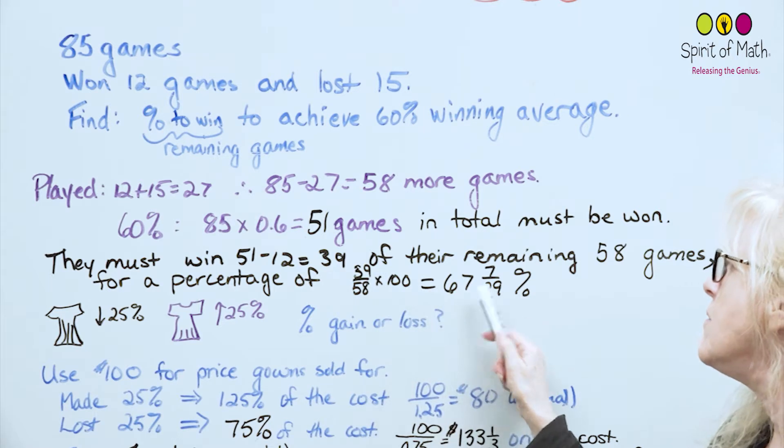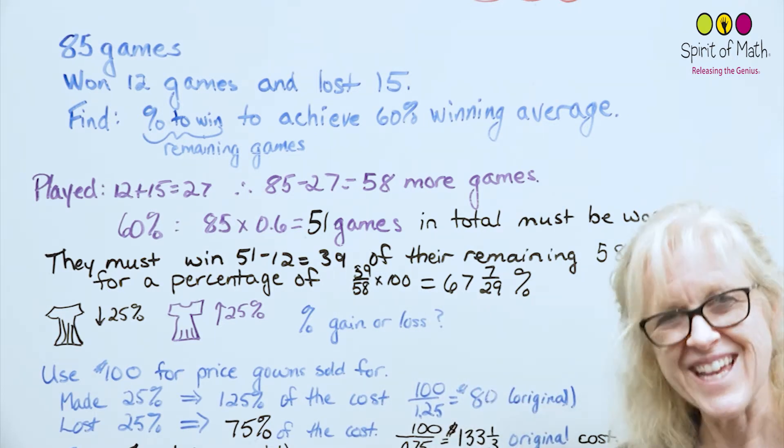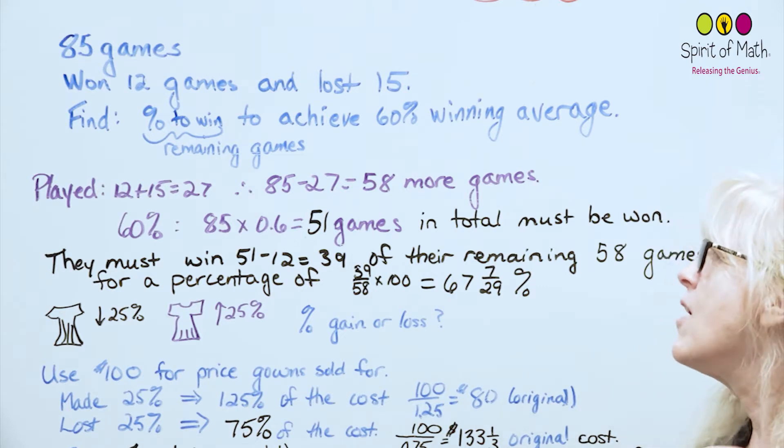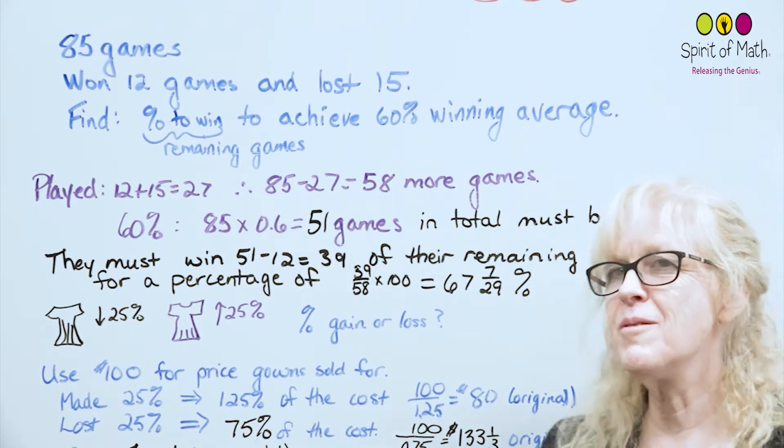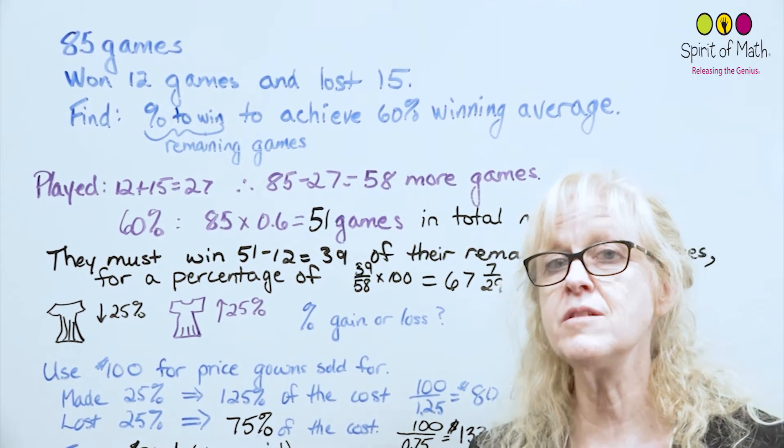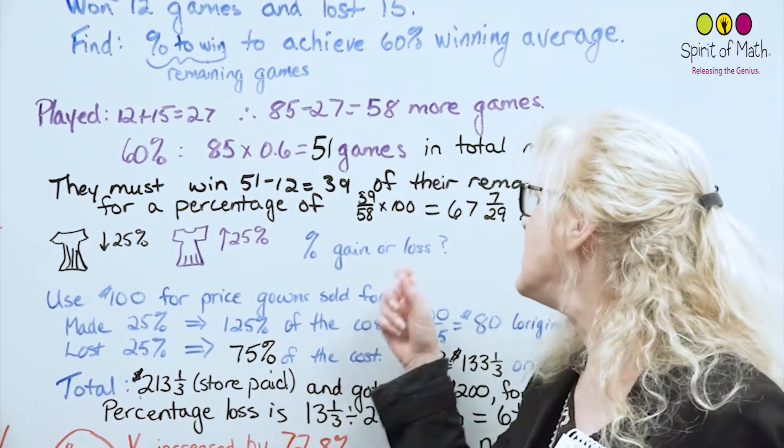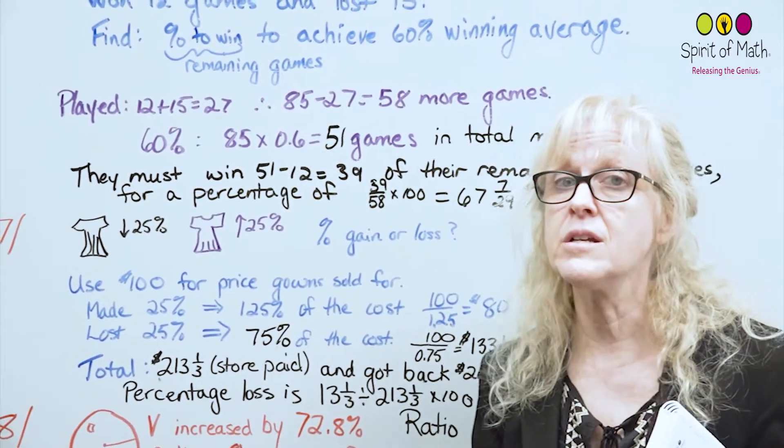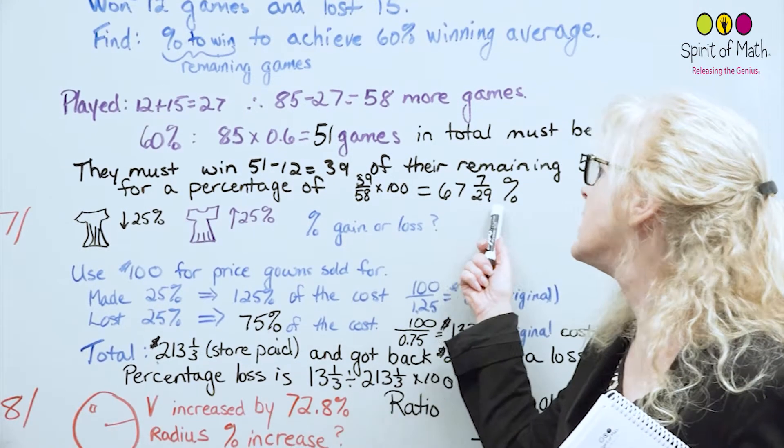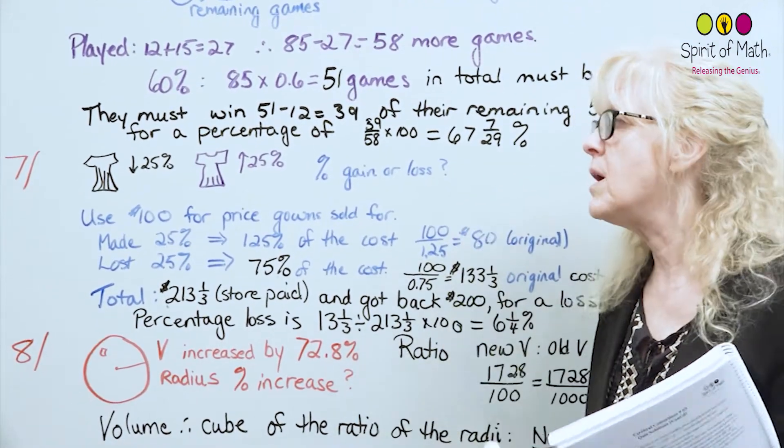If you take that percentage, then you've got 67 and 7/29 percent. So again, don't get mixed up with the total number and the remaining. Just make sure that you know it's 60% of the total, but then you have to find out what percentage of the remaining that you need. And that's why it's a little higher, it's not 60%, it's 67 and a bit percent. That should make sense to you too, just thinking about it.